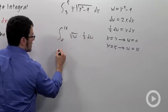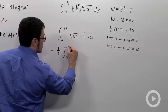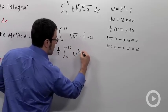So I'll pull the 1 half outside. Integral from 0 to 16. w to the 1 half dw.